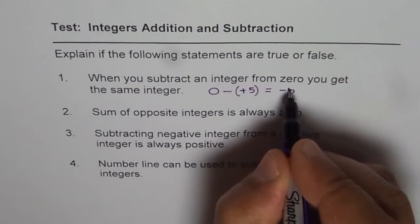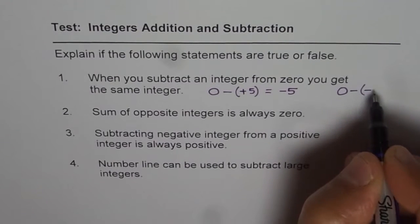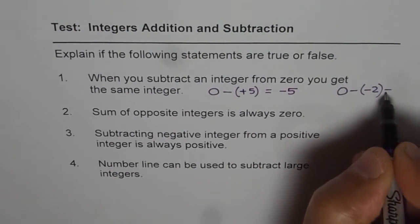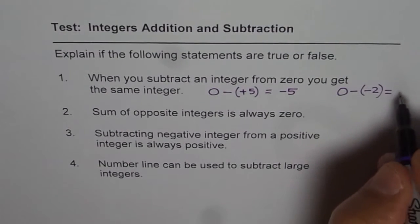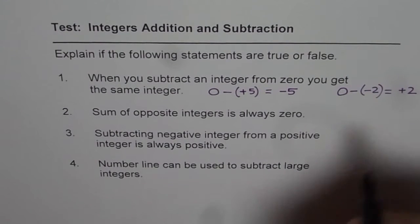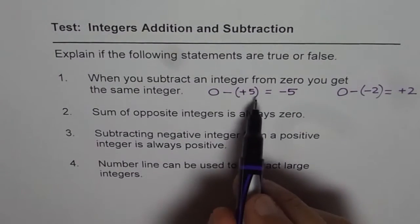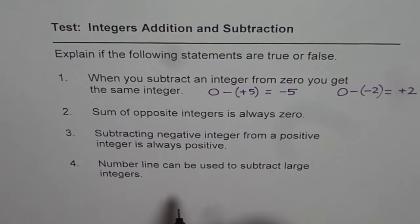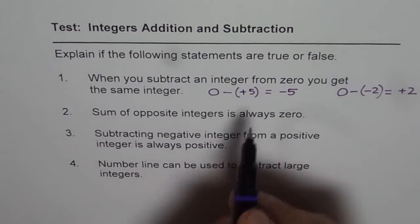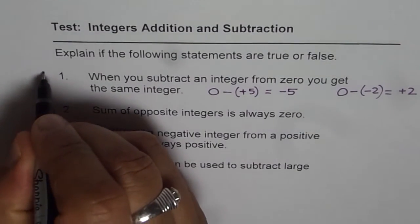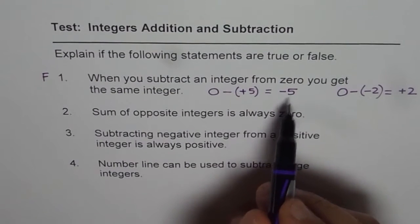How about 0 minus, minus 2? 0 minus, minus 2 should give us plus 2. So, do we get the same integer? No, we get the opposite integer. So, what we get is a positive integer. Therefore, this statement is not true. It is false. The reason is that we get a positive integer.